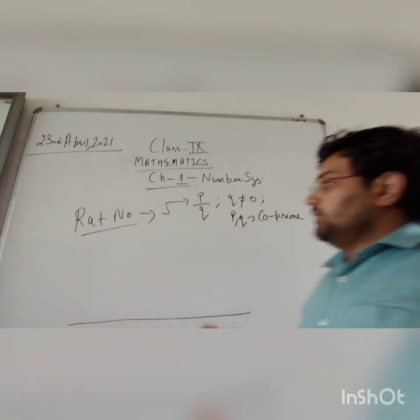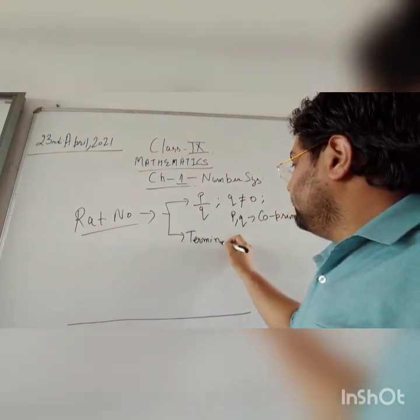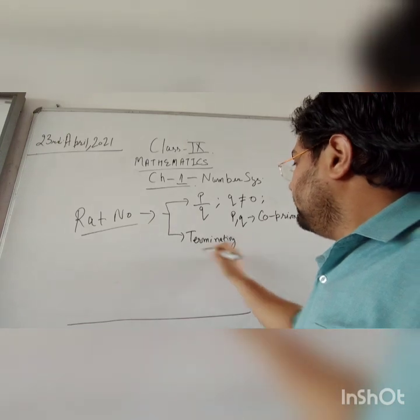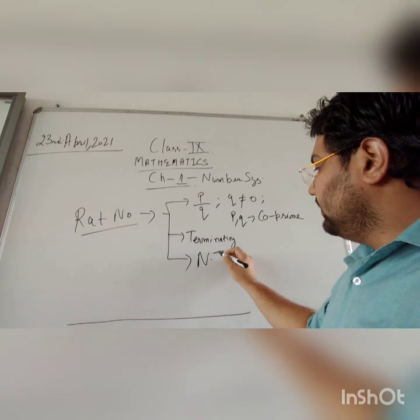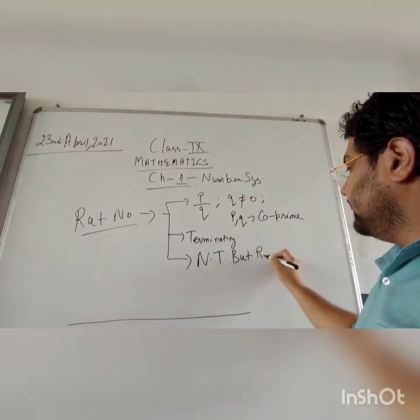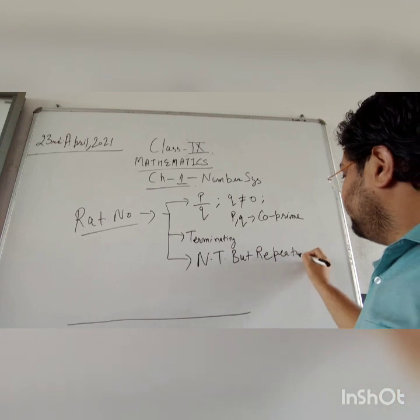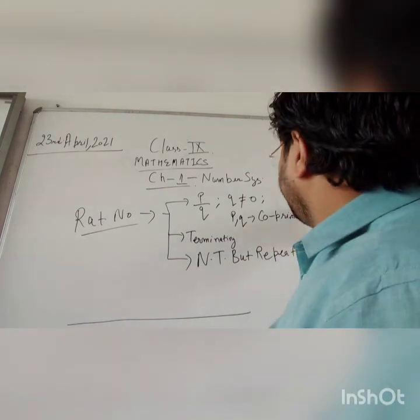Now these rational numbers are terminating in nature, terminating. Or if they are not terminating, then they will be repeating in nature, repeating in nature. I will give you some examples of rational numbers.